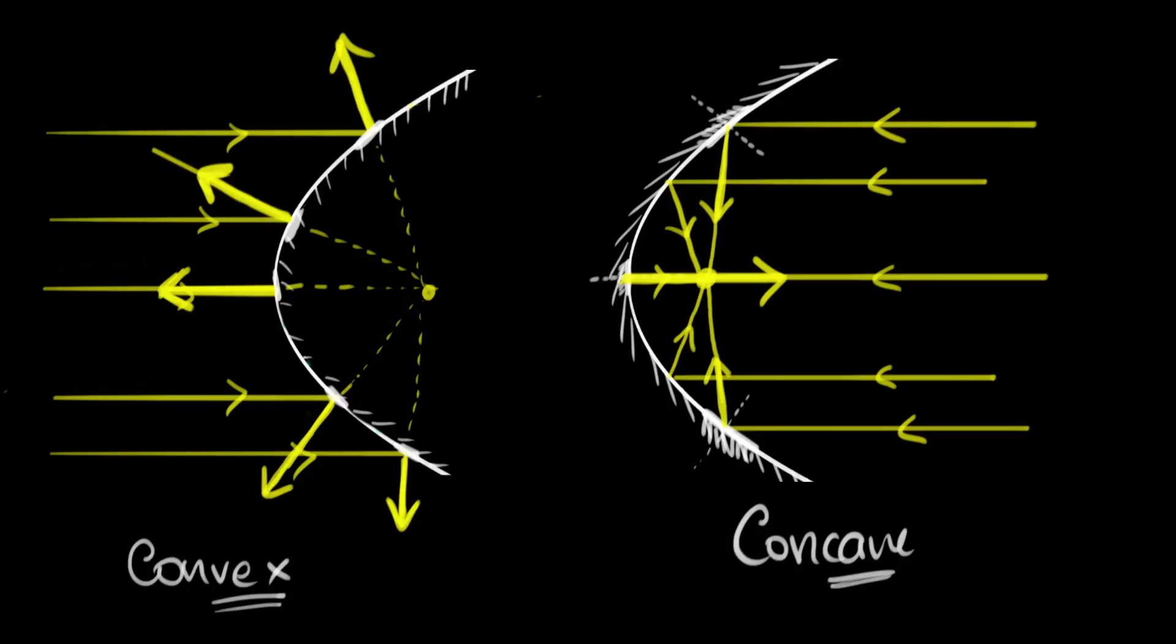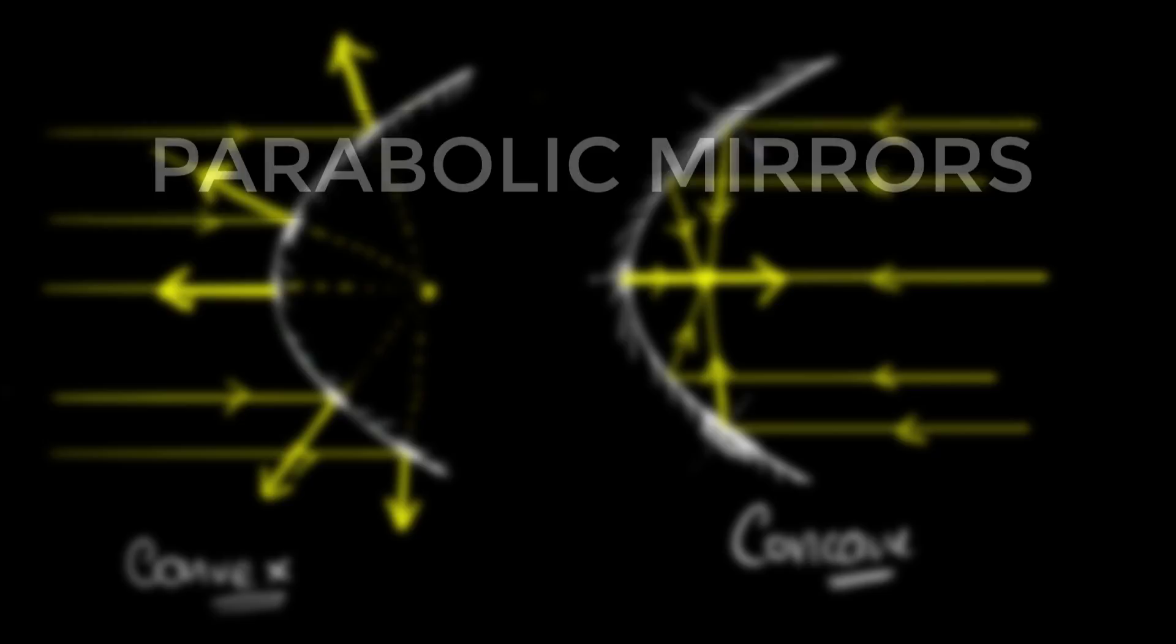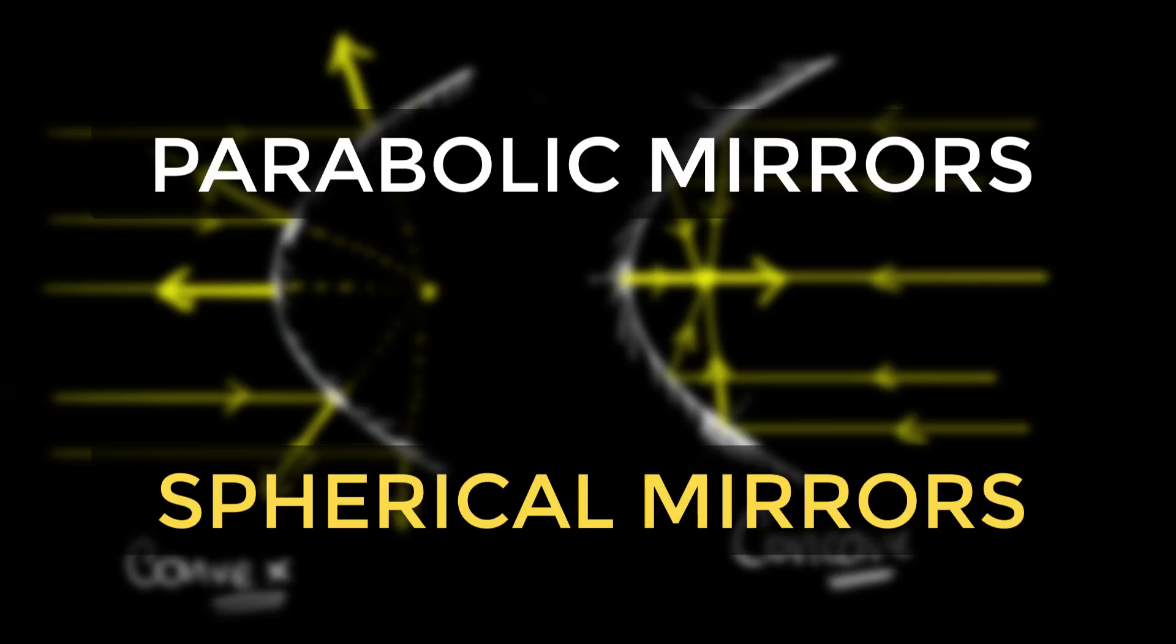In previous videos, you've seen the properties of concave and convex mirrors and their applications. But based on their shape, people usually talk about two types of mirrors: parabolic mirrors and spherical mirrors. So in this video, we'll explore what these are and where they're used.